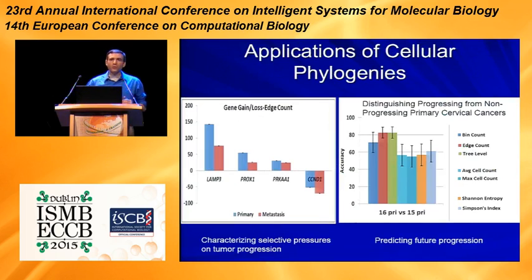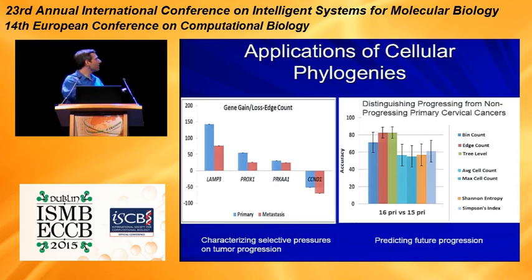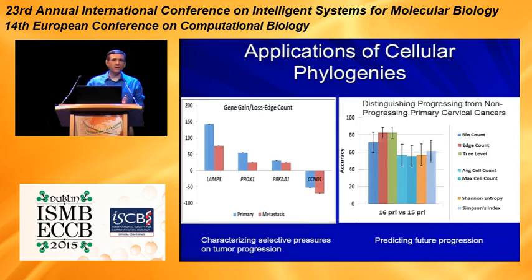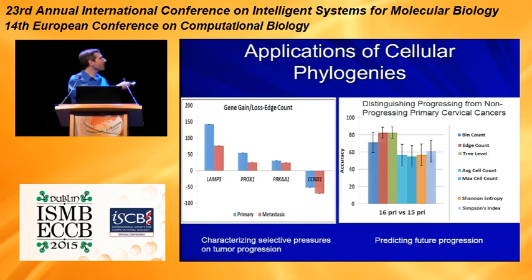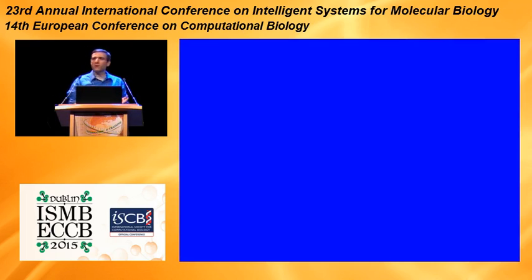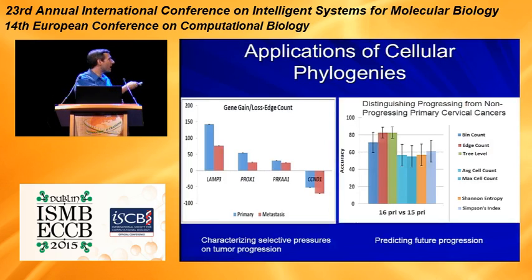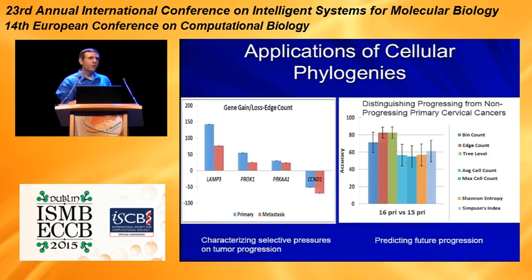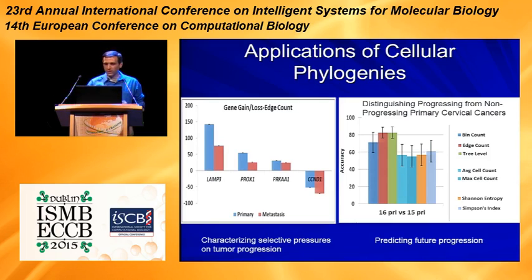We could start to do inferences on how these trees are similar and different across populations. We could get enough edges in the trees and enough trees to start getting robust statistics that allow us to reconstruct models of selective pressures and how those change at different stages in a tumor. And we could start doing classification and prediction — for example, predicting from a primary tumor whether that's a primary that goes on to metastasize or not. It turns out you can do this much more accurately using features extracted from these phylogenetic trees than from the raw cell data or even from more sophisticated models of overall tumor heterogeneity.